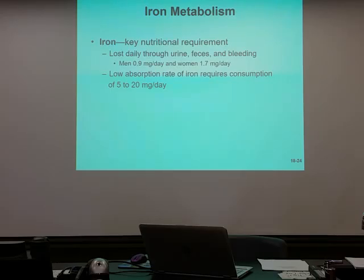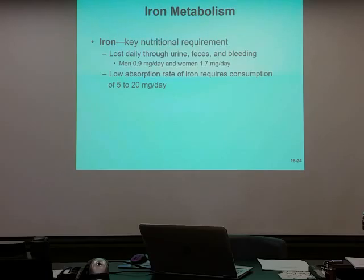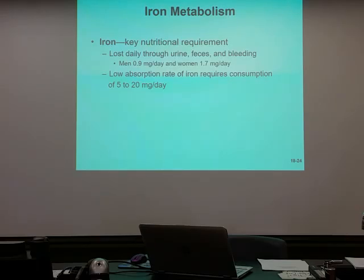If iron makes it into the circulatory system and doesn't get used, the kidneys will re-uptake it, and it becomes part of what gives urine its yellowish-brown color. Getting iron in and out of cells requires a little help — that's handled by the liver and kidneys. As for whether iron is fat-soluble or water-soluble, it actually involves both components, so it's difficult to say yes or no to either one.